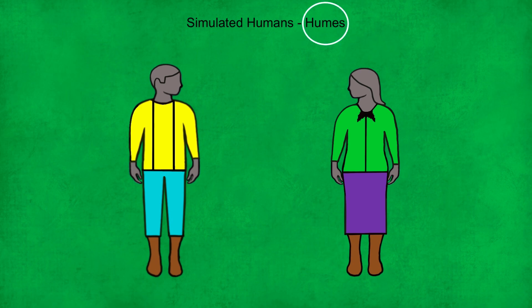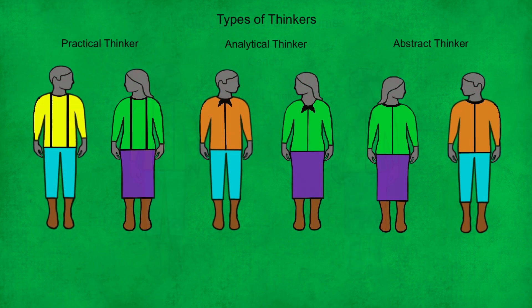Each Hume has a number of characteristics, which include the key ones of gender and age. Type of thinker has only just been added to the simulation. There are 3 broad types of thinking that either a male or female can have, each of which are represented by the top and collar a Hume is wearing. Braces indicate a practical thinker, a collar indicates an analytical thinker, and an open collar indicates an abstract thinker.